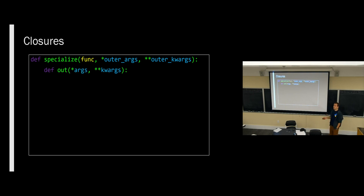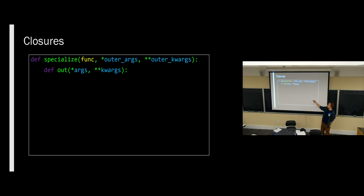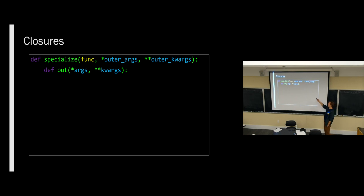The first thing we do is make what we're going to return — a new function. Our new function also takes in star args and star star kwargs. You can name these parameters whatever you want; the important thing is there's a star and two stars. The reason you have to call them different things here is that otherwise these parameters will mask the outer parameters, and inside of this function we want references to those outer parameters.